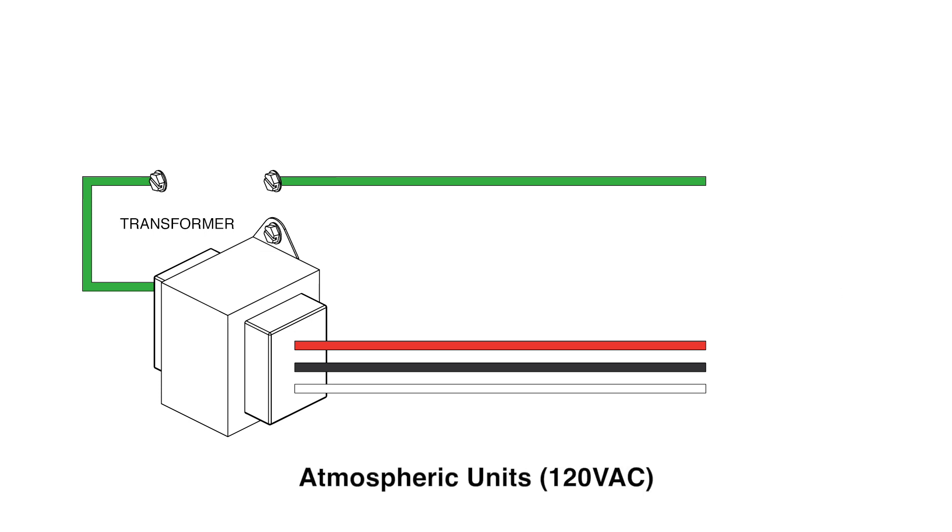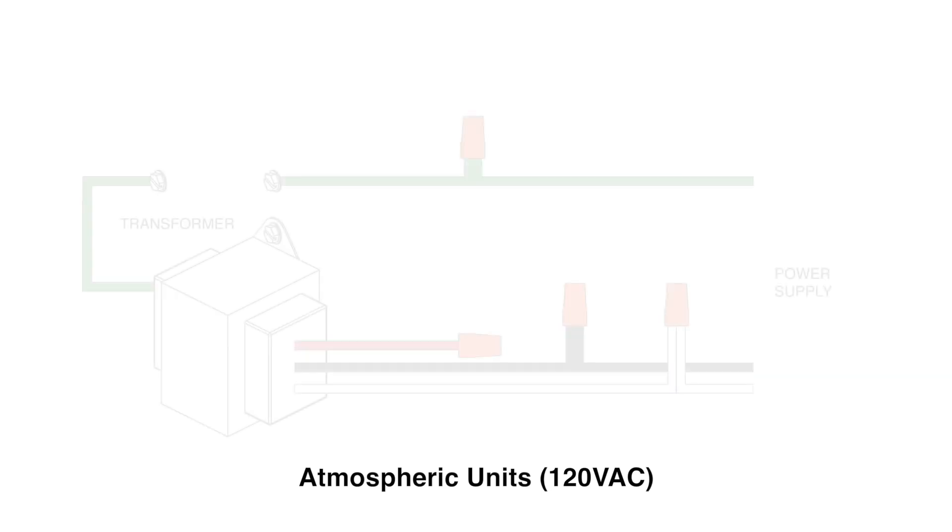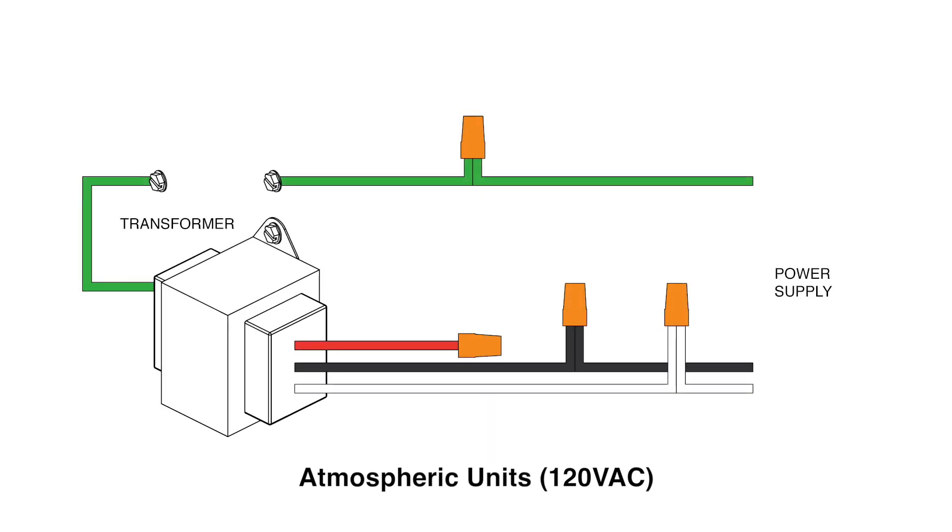For 120 volts, strip back the ends of the incoming wires as well as the black, white, and green wires from the transformer. Attach the incoming hot wire to the black wire from the transformer using a wire net. Attach the incoming white or neutral wire to the white wire from the transformer. Attach the green ground wires.